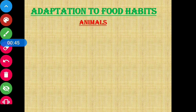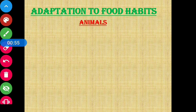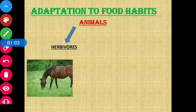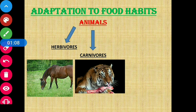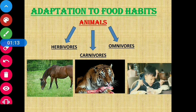Today, we are going to start our discussion from the topic adaptation to food habits. On the basis of food habits, animals are categorized into 3 groups: first, herbivores — example, horse; next, carnivores — example, tiger; and next, omnivores — example, human beings. Let us find out about these 3 categories in much more detail.